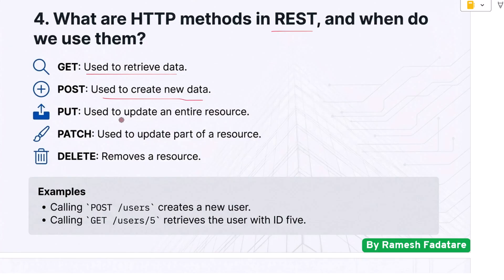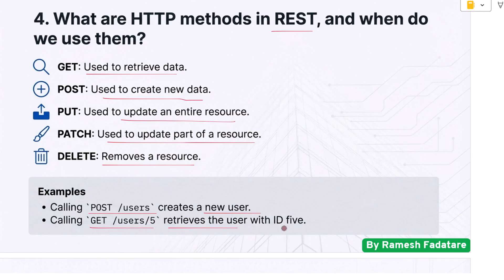PUT is used to update an entire resource, PATCH is used to update part of a resource, and DELETE removes a resource. For example, calling POST /users creates a new user, and calling GET /users/5 retrieves the user with ID 5.